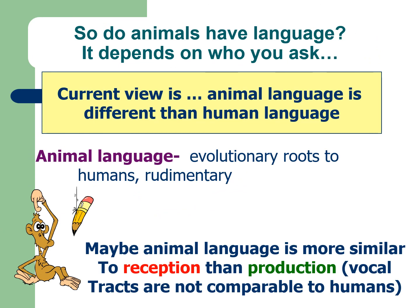So do animals have language? It depends on who you ask. The current view is that animal language is different from human language, and animal language has very rudimentary evolutionary roots in humans. It seems that maybe animals can receive and understand language, as found at the Language Research Center. However, their production is limited — the structure of their mouths is not conducive to vocalized human speech.